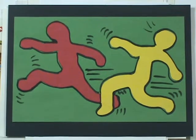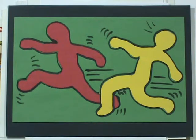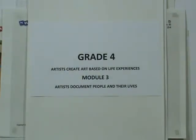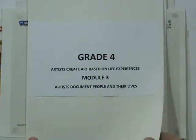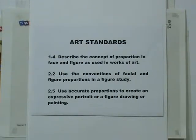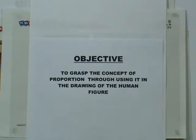This is a fourth grade lesson on drawing the figure in proportion based on the work of Keith Haring. Our Common Core standard is to identify the reasons and evidence a speaker provides to support particular points. Our main idea in Grade 4 is that artists create art based on life experiences, and in Module 3, artists document people and their lives. The art standards are to describe the concept of proportion in face and figure as used in works of art, use the conventions of facial and figure proportions in a figure study, and use accurate proportions to create an expressive portrait or figure drawing or painting. Our objective is to grasp the concept of proportion through using it in the drawing of the human figure.